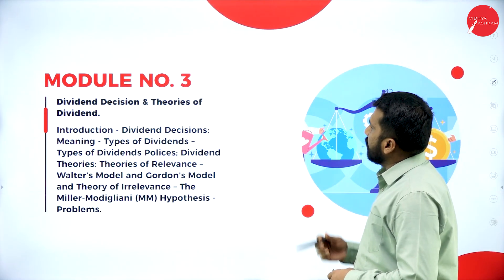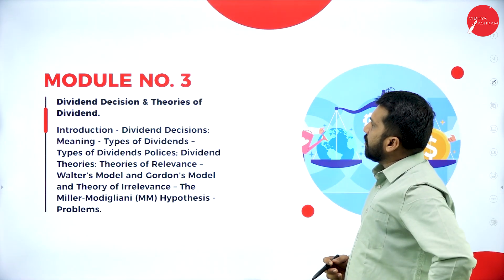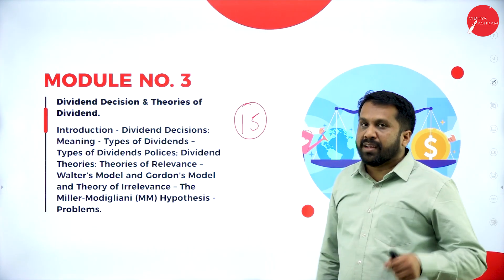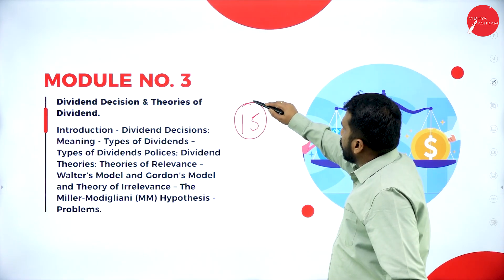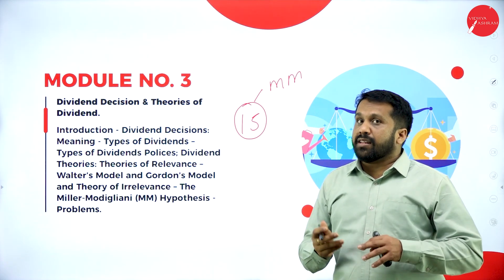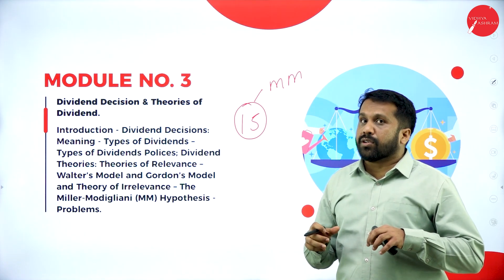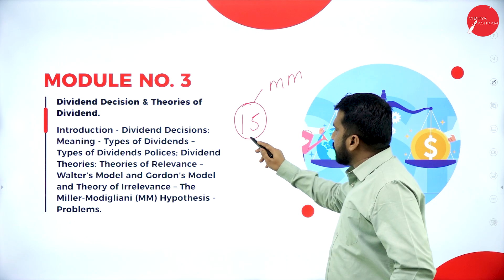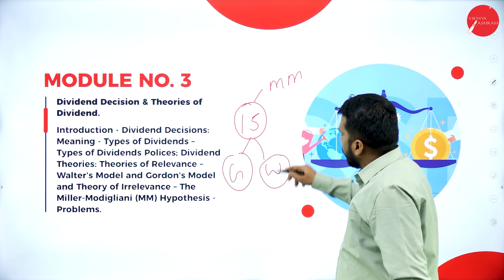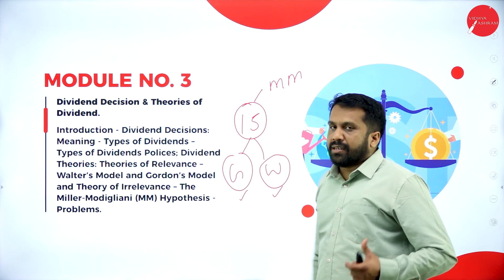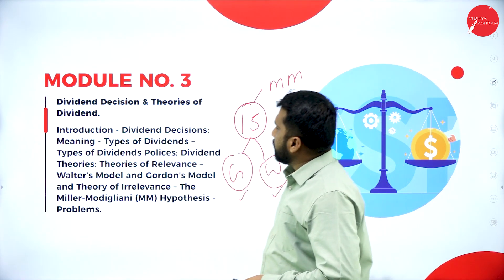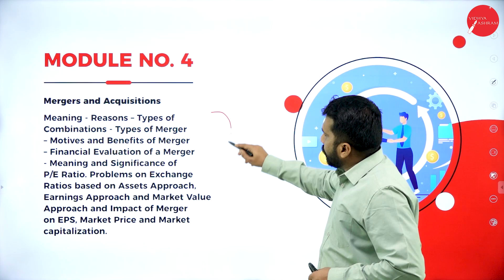Module three is dividend decisions, which carries a 15-mark major question. You will get the MM approach — Modigliani-Miller — but the major ones to focus on are Gordon's model and Walter's model. Problems will be based only on Gordon's model and Walter's model.